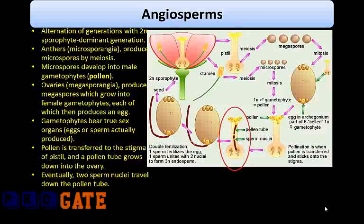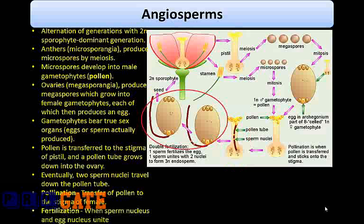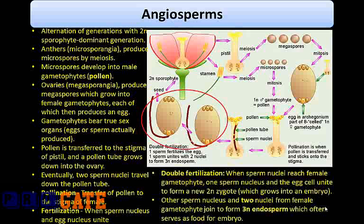Eventually two sperm nuclei travel down the pollen tube. Pollination is the transfer of pollen — the male gametophyte — to the stigma, whereas fertilization is when the sperm nucleus and the egg nucleus unite. Angiosperms have an unusual process called double fertilization: one sperm nucleus and the egg cell unite to form a new 2n zygote which grows into an embryo; the other sperm nucleus and two nuclei from the female gametophyte join to form 3n endosperm, which often serves as food for the embryo.